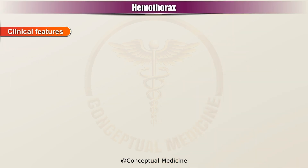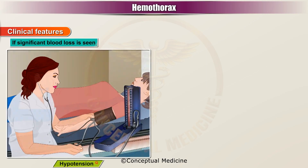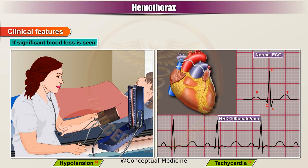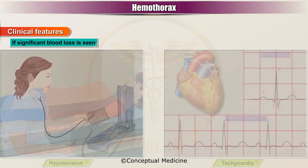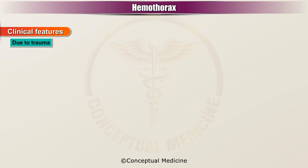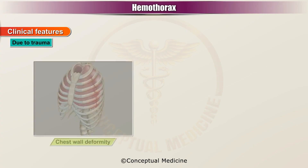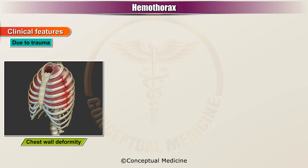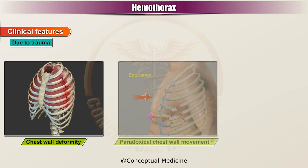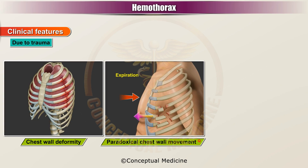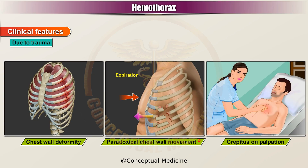If significant blood loss is seen, then there will be hypotension and tachycardia. If hemothorax is due to trauma, then one can find a chest wall deformity, paradoxical chest wall movement, and crepitus on palpation.